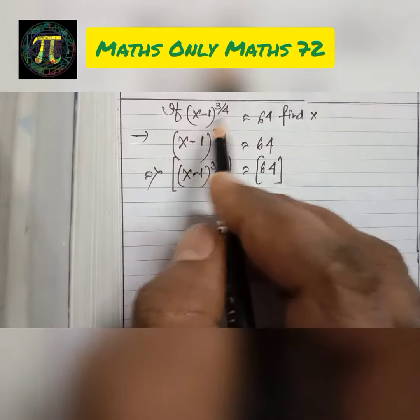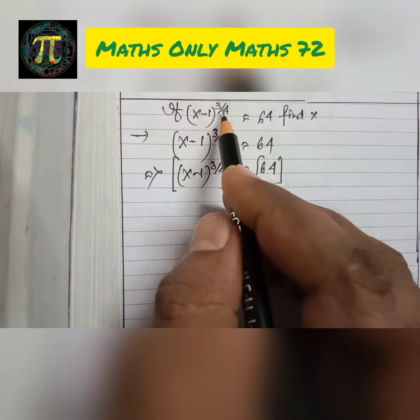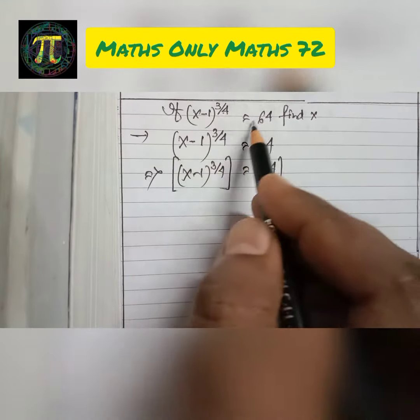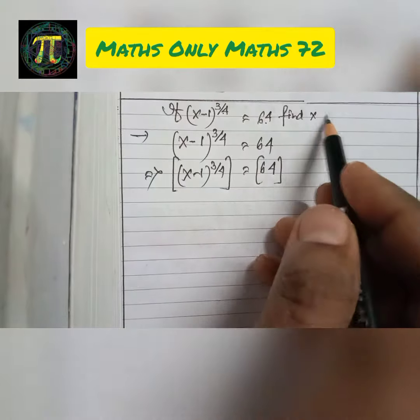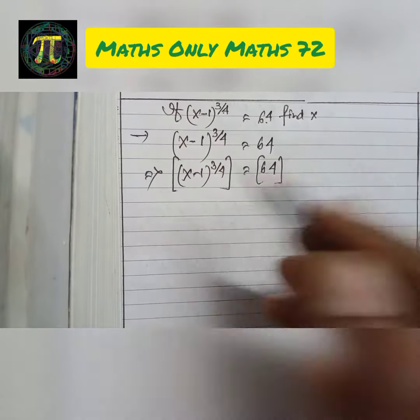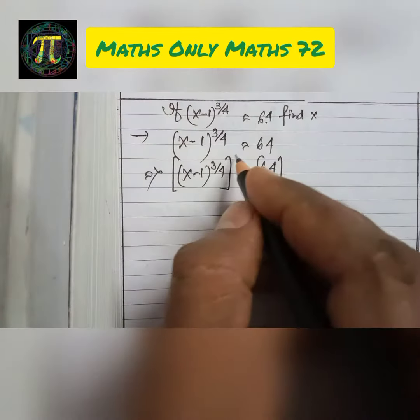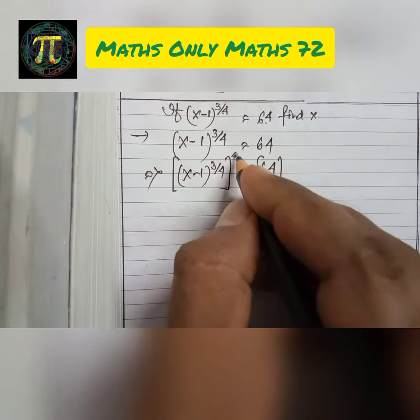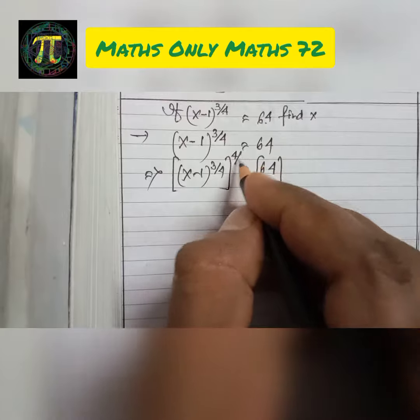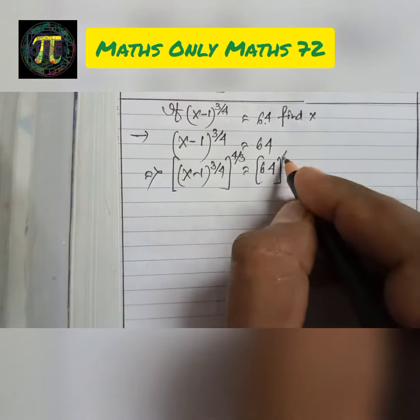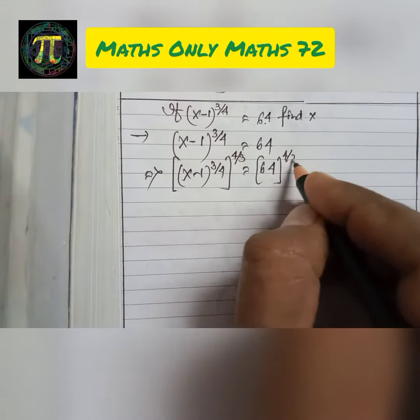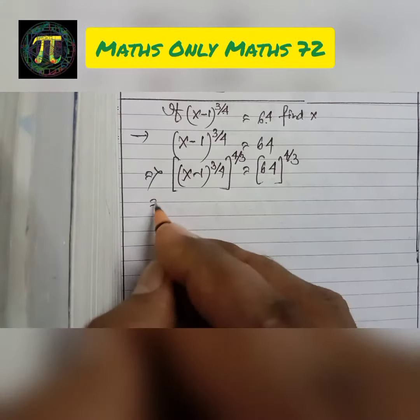If (x minus 1) to the power 3 by 4 equals to 64, find x. We make both sides to the power 4 by 3.